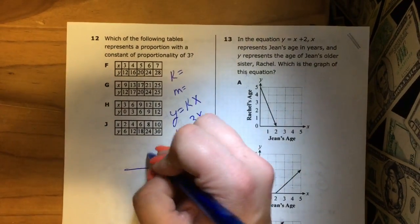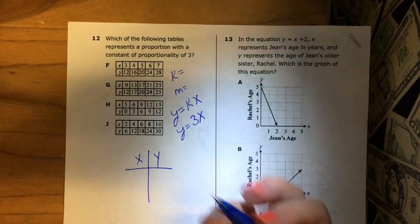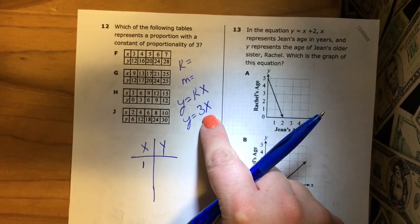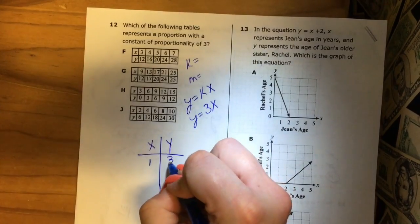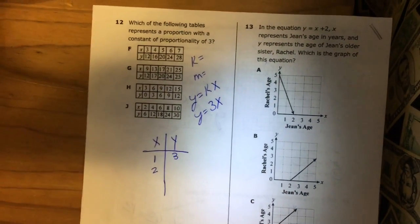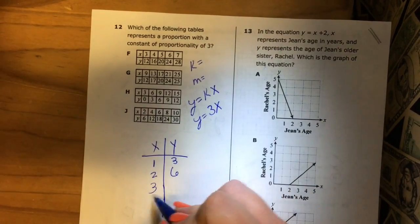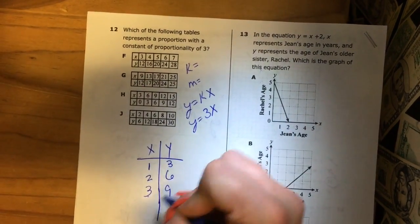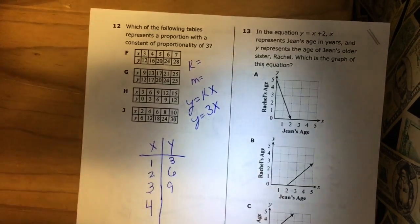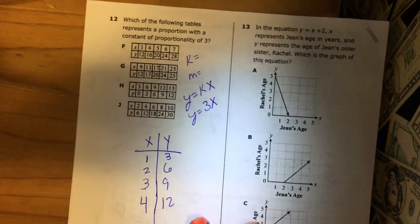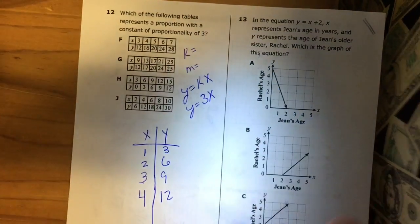Make your own table of X and Y. Okay, so when X is 1, I'm gonna multiply 1 times 3 which is 3. When X is 2, I'm gonna multiply 2 times 3 which is 6. When X is 3, I'm gonna multiply 3 times 3 which is 9. When X is 4, I'm gonna multiply 4 times 3 which is 12. Alright, let's see if our table matches any of these.